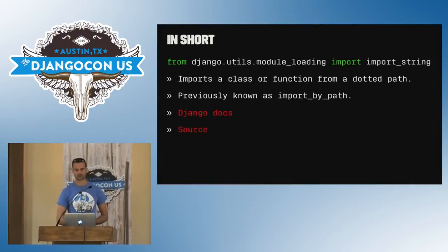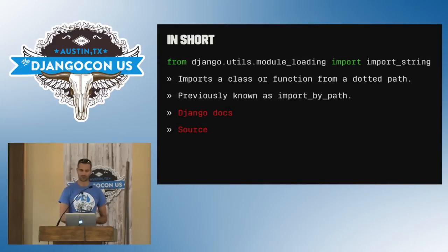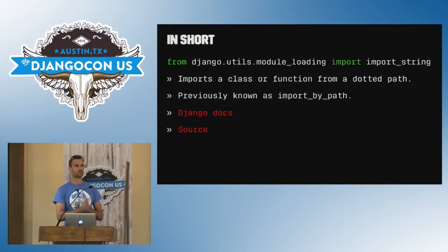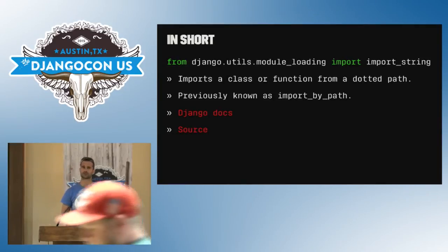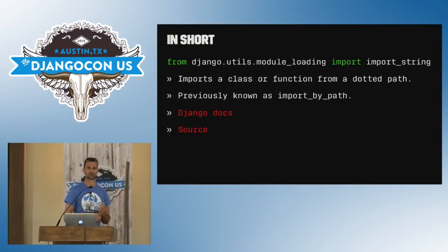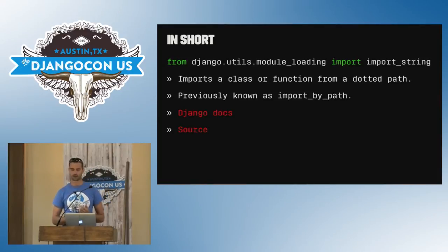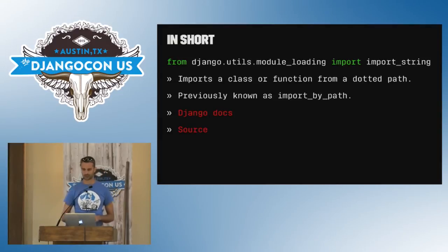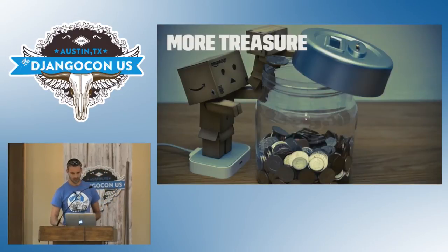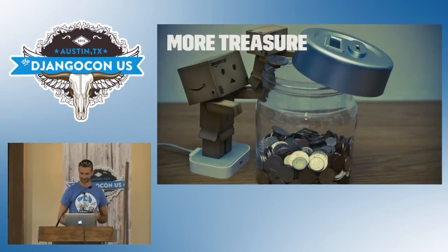So: from django.utils.module_loading import import_string is all you need to remember. It was previously called import_by_path — I think it was deprecated in 1.6 and will be removed in 1.9, so there may be some differences in naming. And this is the second treasure.